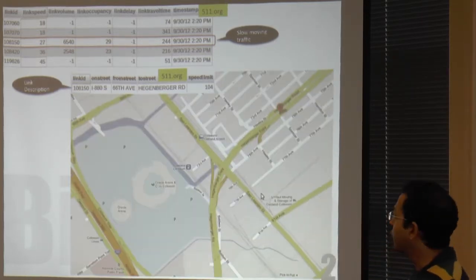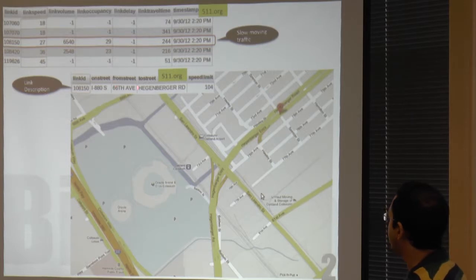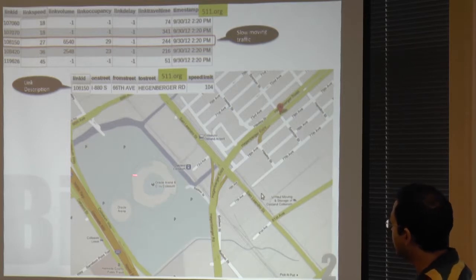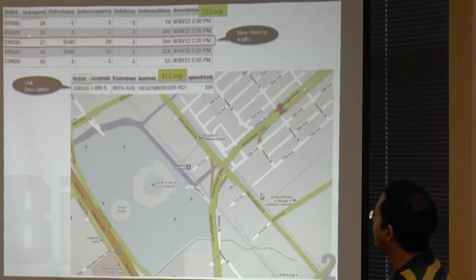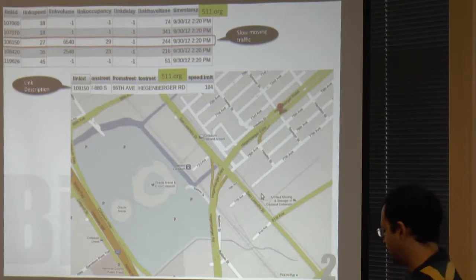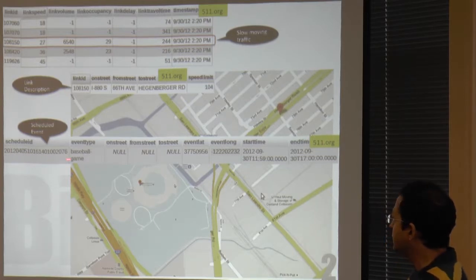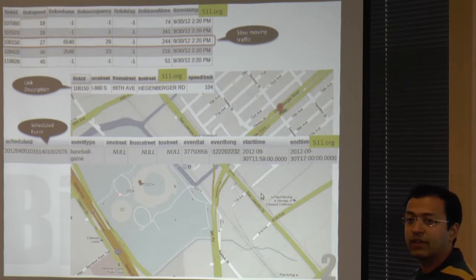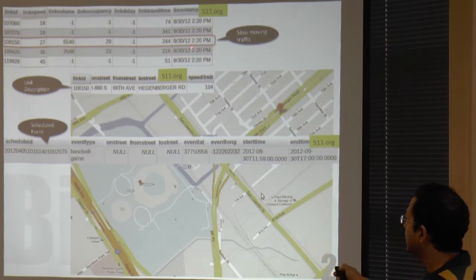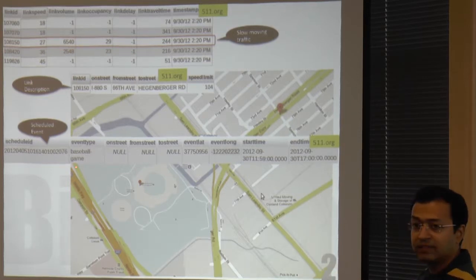I am taking a map and putting this particular link on it. You can see this is the link that this data belongs to — here is an arena, a sporting arena. I was wondering why there is slow-moving traffic at this particular location, and then I found that 511.org gives me that there is a baseball game at this particular location. So I can explain slow-moving traffic using this event.